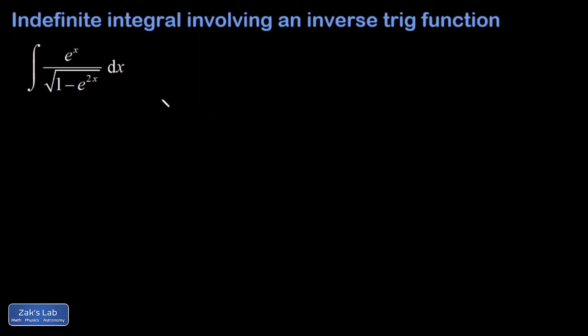In this video we have an indefinite integral that's e to the x over the square root of 1 minus e to the 2x. And one of the keys to this integral is that when you see that e to the 2x you can write it as e to the x squared just by using exponent properties. So that's probably a good first step.